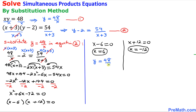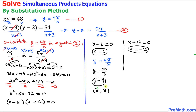From equation number one, y equals 48 over x. For x equals 6, y equals 48 divided by 6, which equals 8. So our first solution is the ordered pair (6, 8), where 6 is the x value and 8 is the y value.